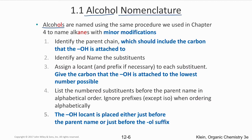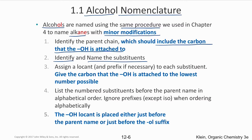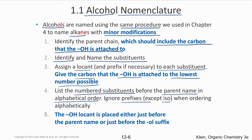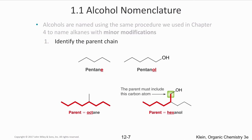Alcohols are named using the same procedure as alkanes with minor modifications. First, identify the parent chain — it must include the carbon bearing the OH group. Second, identify and name substituents. Third, assign locants giving the carbon with OH the lowest possible number. List substituents alphabetically before the parent name, ignoring prefixes like 'iso'. The OH locant is placed before the parent name or before the '-ol' suffix.